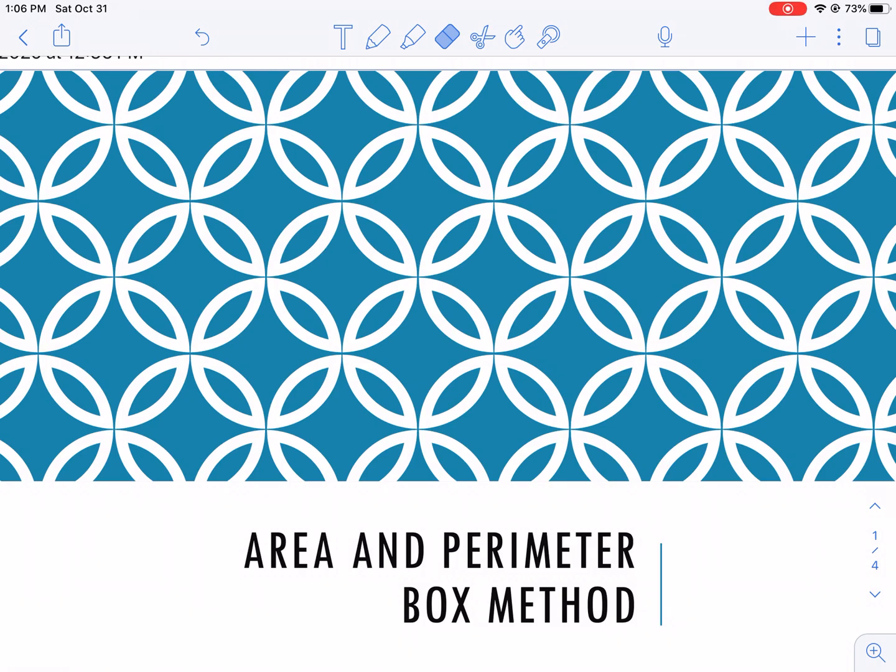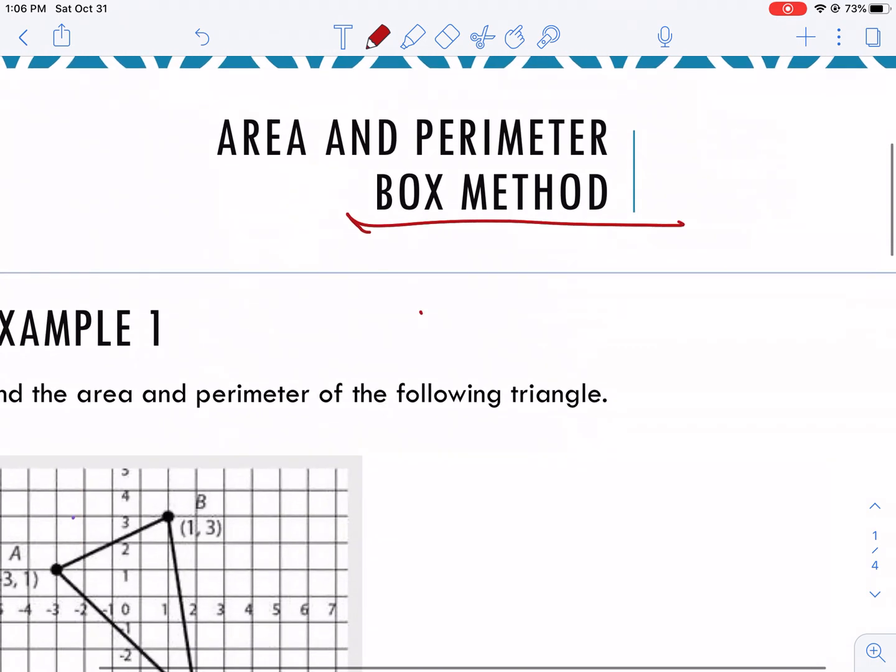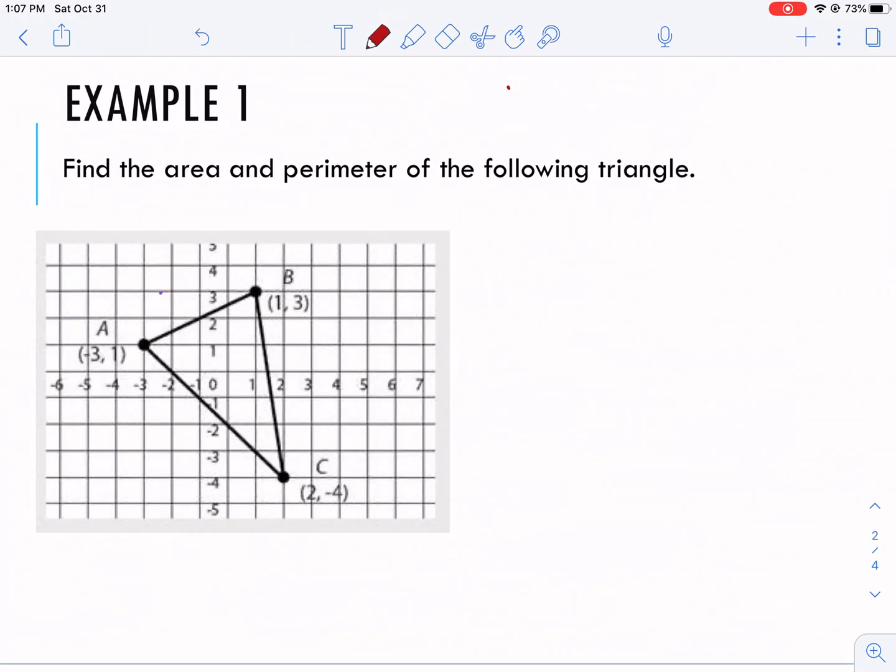So we are going to find the area and perimeter of triangles on the coordinate plane. And in order to do this, we need to use this method called the box method. The reasoning is usually we're used to seeing for area, hopefully you're thinking it's base times height divided by 2 for triangles, and the perimeter is when we add all the sides.